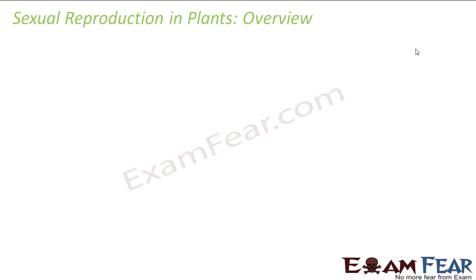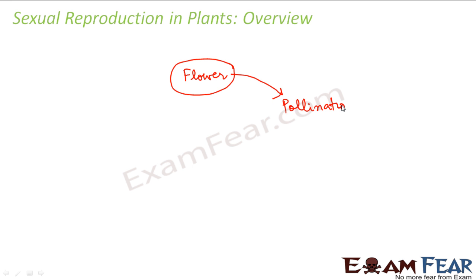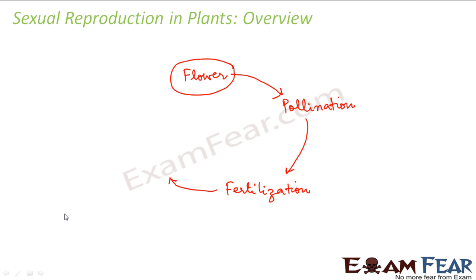Let us have a quick overview of the entire cycle. The reproductive part of the plant is the flower — it all starts with a flower. Inside the flower we have the male gametes, that is pollen grains, and the female gametes, that is the egg. In the first stage, pollination — the pollen grains are transferred to the female part of the flower, the stigma. The next step is fertilization — the pollen grains reach the ovary, fuse with the egg, and a zygote is formed.